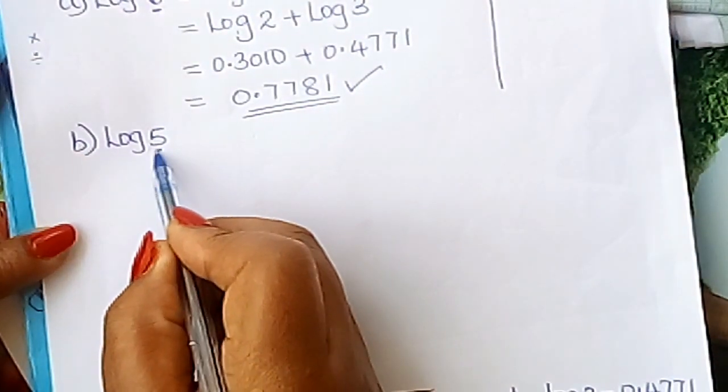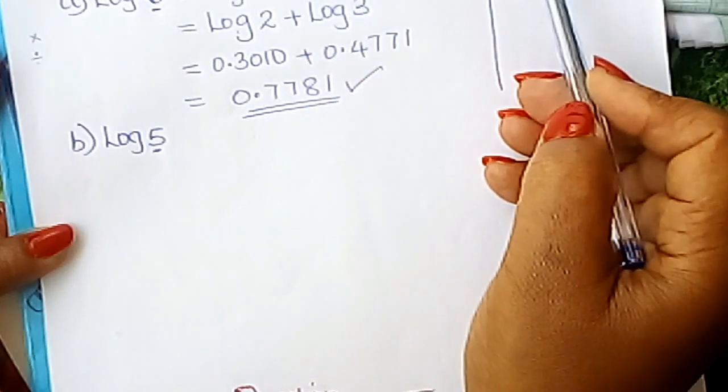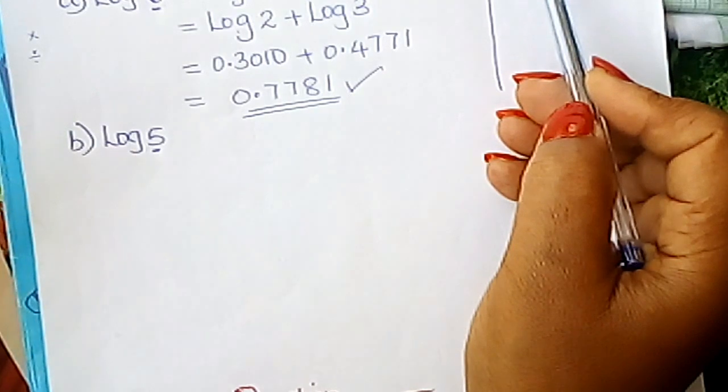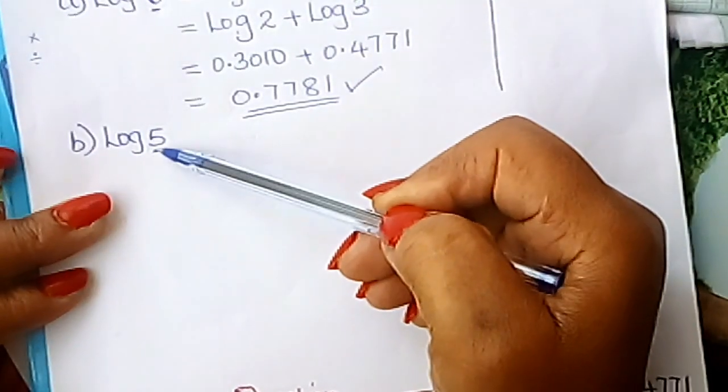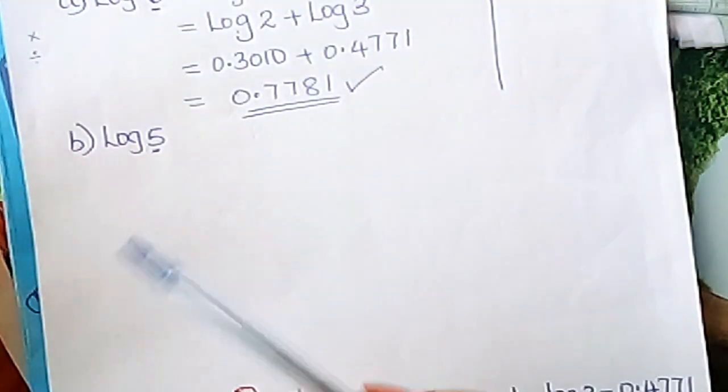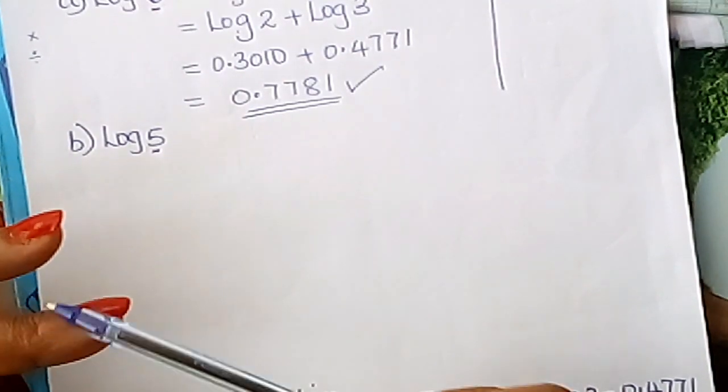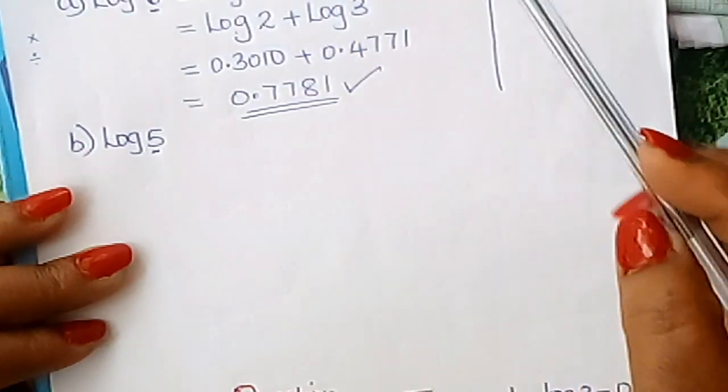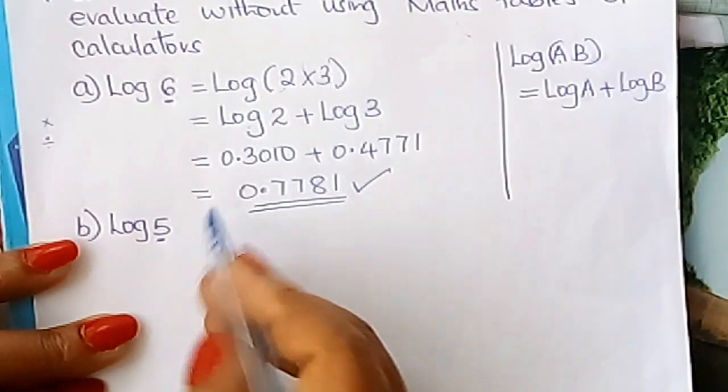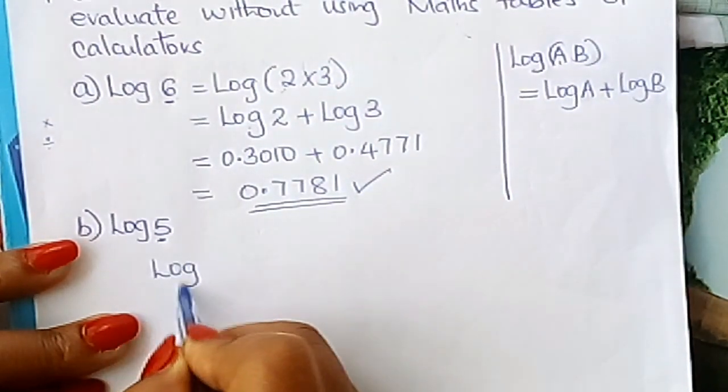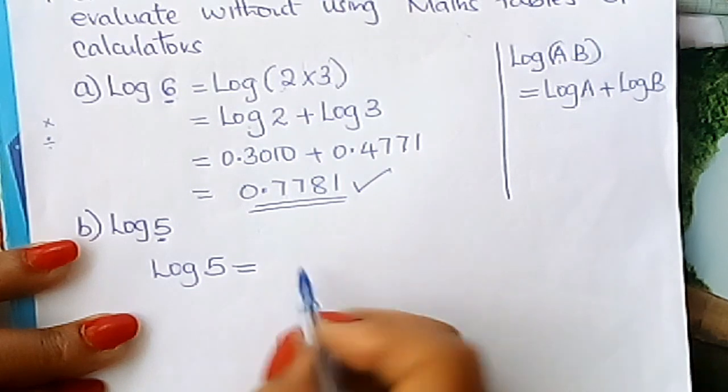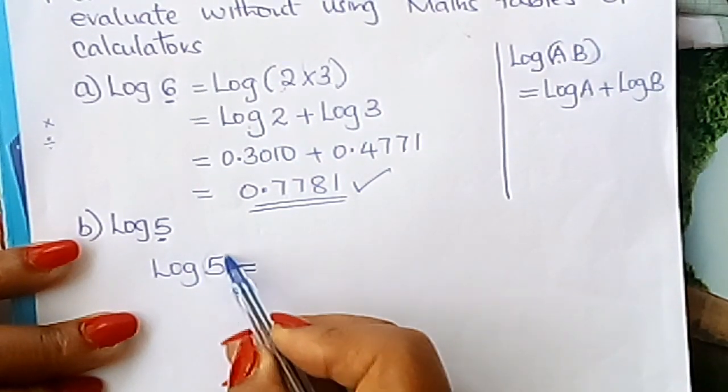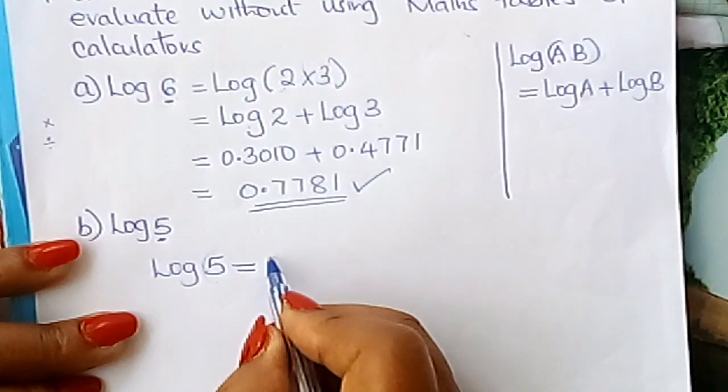How can you express 5 in terms of 2 and 3? Multiplying, it will not give you that. Dividing, it will not give you 5. And remember, we are just dealing with division and multiplication, expressing 5 in terms of 2 and 3. It is not possible. So how do we go about it? Here we introduce 10. We talk of 10 over 2.